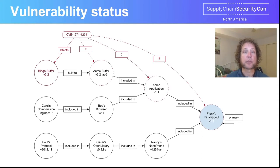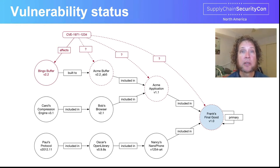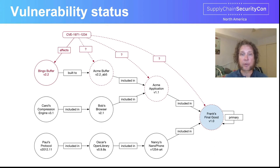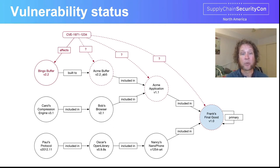What happens when a vulnerability is identified in BingoBuffer? The BingoBuffer developer confirms the problem and produces a fix — it's a true vulnerability, no argument. There's no question that the CVE affects BingoBuffer. But what does this mean through the supply chain from BingoBuffer down into its use, ultimately in Frank's Final Good?